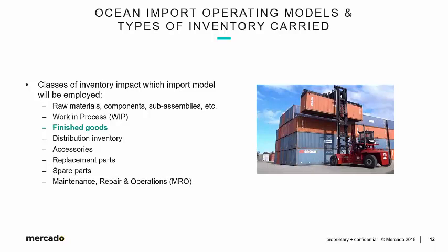The next two slides are a reminder we've stated many times. Classes of inventory impact which import model will be employed — we said this on the front end of the module. This is a listing of different types of inventories in a supply chain, but finished goods is highlighted in green because that's the model we've been using: omnichannel distribution of finished goods. Not every importer imports finished goods, but in our examples we have predominantly been talking about finished goods.